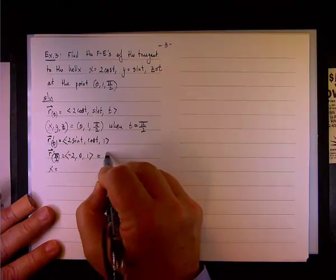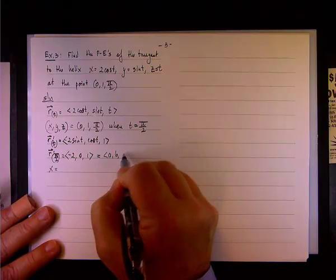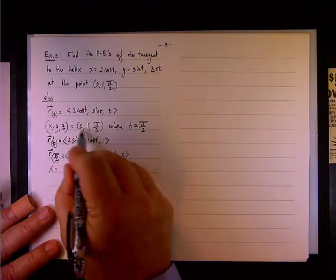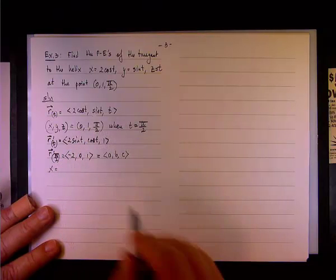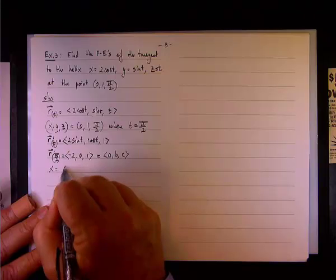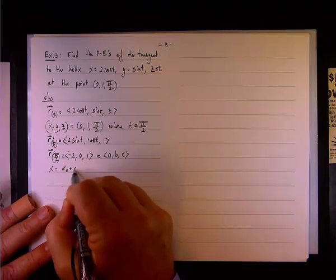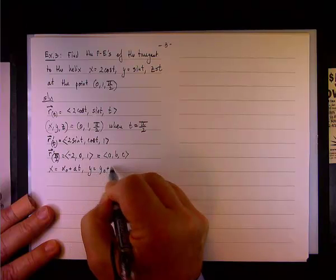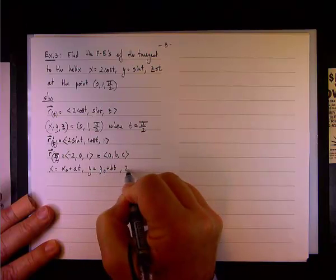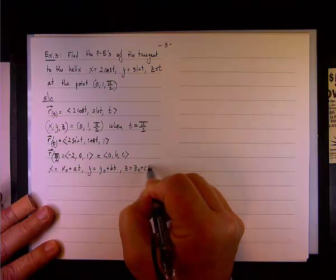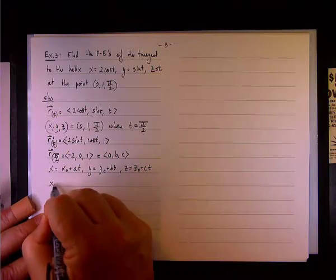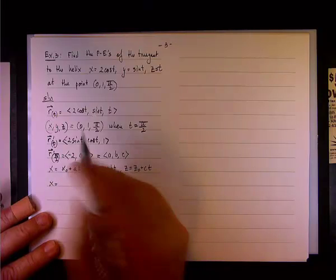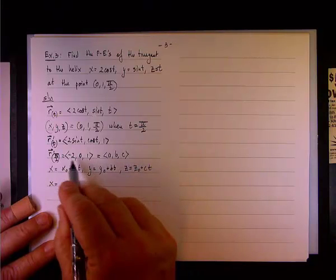So we know now that the parametric equations are going to be x equals, let's say this is a, b, and c. And those points are x sub 0, y sub 0, and z sub 0. So we have x sub 0 plus at, y equals y sub 0 plus bt, and z equals z sub 0 plus ct.